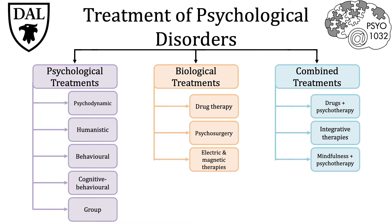The second category of treatment for psychological disorders is biological treatments, which includes things like drug therapy, psychosurgery, and electric and magnetic therapies. Finally, we can combine these two approaches for things like integrative therapies and mindfulness and psychotherapy, to try and maximize the efficacy of biological and psychological treatments so that an individual can have the best chances of living a happier and healthier life.